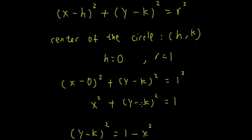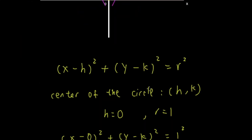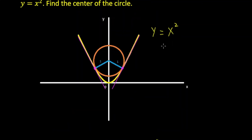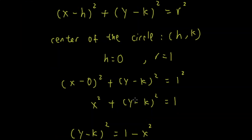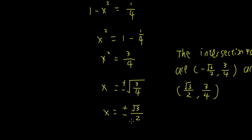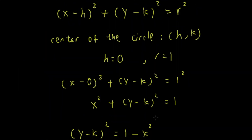In the circle equation, the unknown is k. Since we know the intersection points lie on both curves, we can substitute y = x² into the circle equation x² + (y − k)² = 1 and then use the known x-value at the intersection. The only unknown remaining will be k, which gives us the y-coordinate of the center.